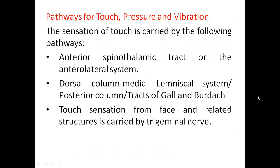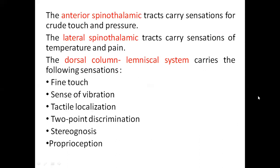The sensation of touch is carried by the following pathways: the anterior spinothalamic tract or the anterolateral system; the dorsal column medial lemniscal system, also known as the posterior column or tracts of Goll and Burdach; and touch sensation from the face and related structures is carried by the trigeminal nerve. The anterior spinothalamic tract carries sensation for crude touch and pressure, while the lateral spinothalamic tract carries sensation of temperature and pain.